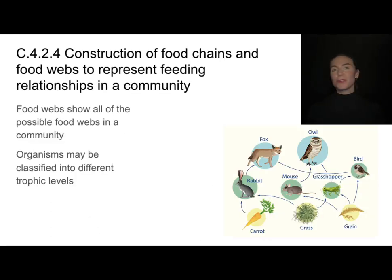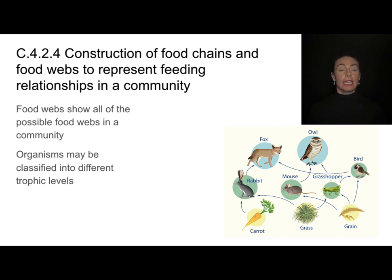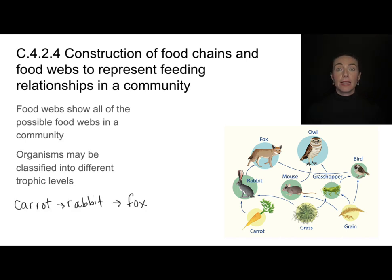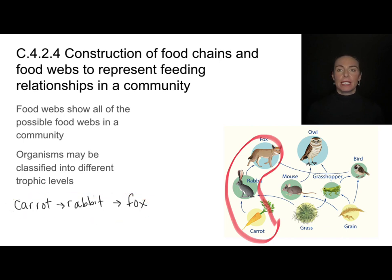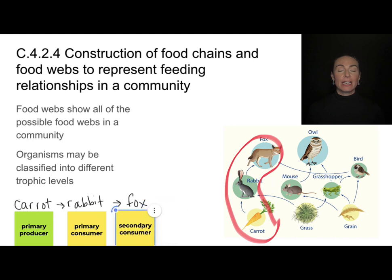Food chains aren't very realistic — they don't show all of the feeding relationships in an ecosystem. A food web shows a much more realistic and complex set of feeding relationships. We can classify organisms into different trophic levels — the level at which they're feeding — but it depends on what they're eating. In the food chain: carrot, rabbit, fox — the carrot is the primary producer, the rabbit is the primary consumer, and the fox is a secondary consumer. These classifications are what we call trophic levels.